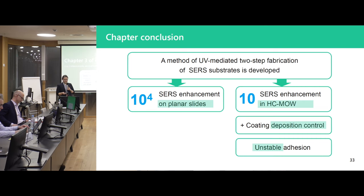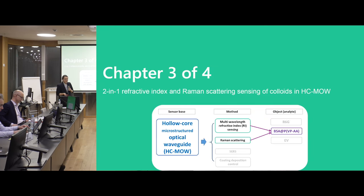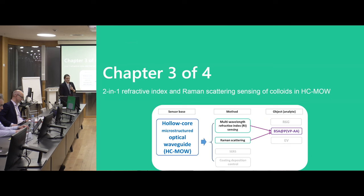The conclusion of this part is that a UV-mediated two-step fabrication method for SERS substrate was developed. It provided good SERS enhancement on planar substrates, but the enhancement was not as great in the hollow core waveguide — possibly because UV-mediated gold reduction uses light, but the waveguide itself strongly scatters light. An advantage of using the hollow core waveguide for substrate building is the possibility of coating deposition control during the process; a disadvantage is unstable adhesion.